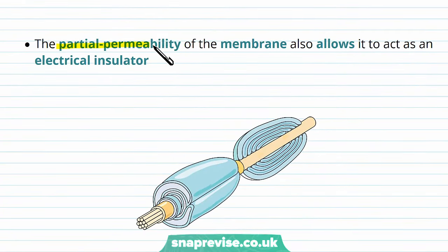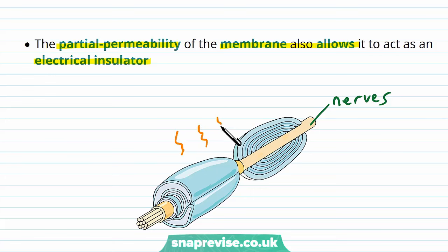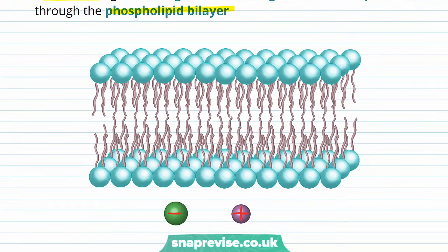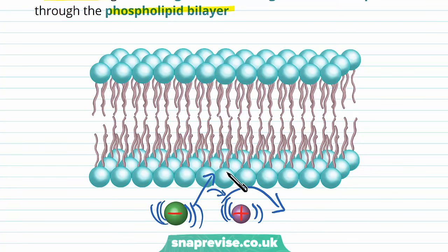The partial permeability of the membrane also allows it to act as an electrical insulator. In nerve cells or neurons, a myelin sheath forms where cells wrap around and act as an electrical insulator, meaning electricity and charged particles cannot pass through those parts of the neuron. The reason it insulates against charge is that charged ions cannot pass through the phospholipid bilayer — when ions are dissolved in water they're surrounded by water molecules, and if water can't get through, the ions can't either. This keeps charge in the right proportions inside and outside, acting as an effective electrical insulator.